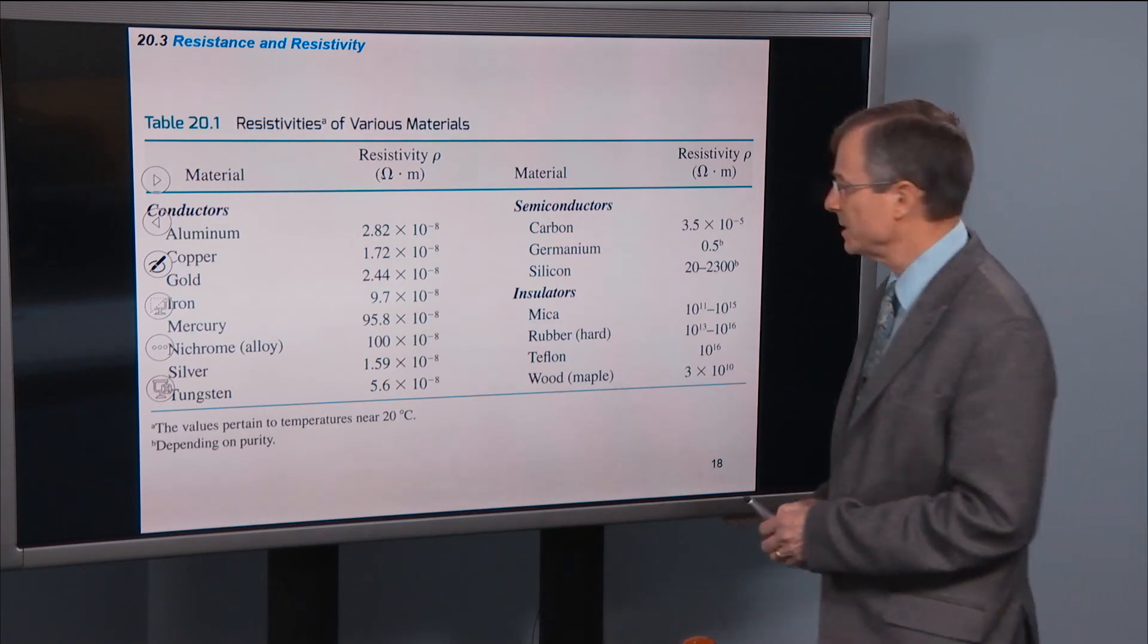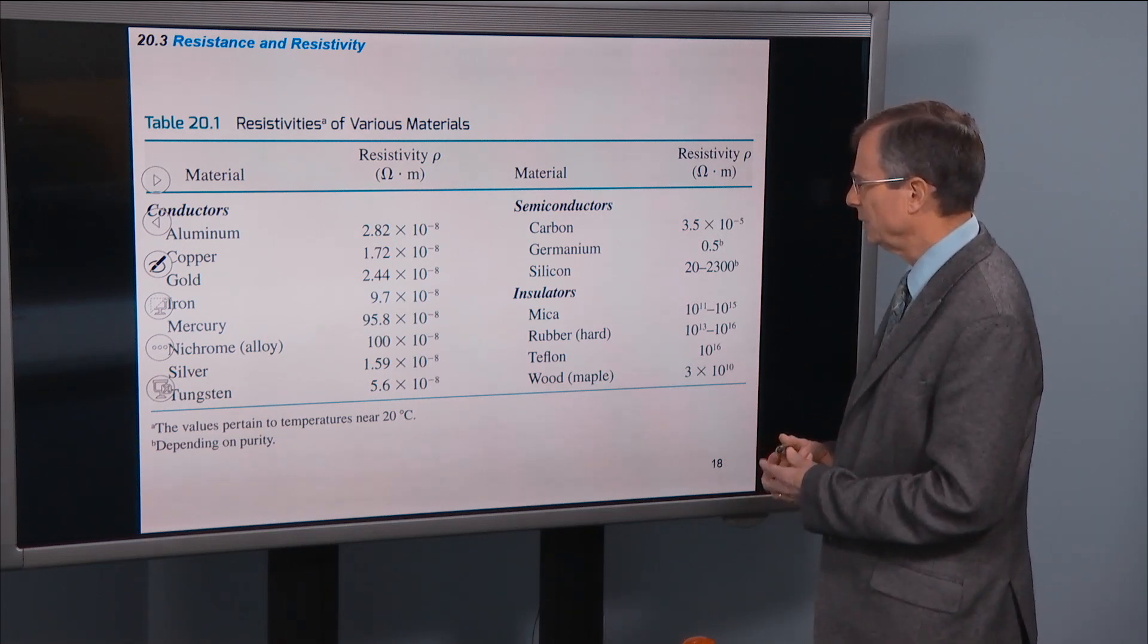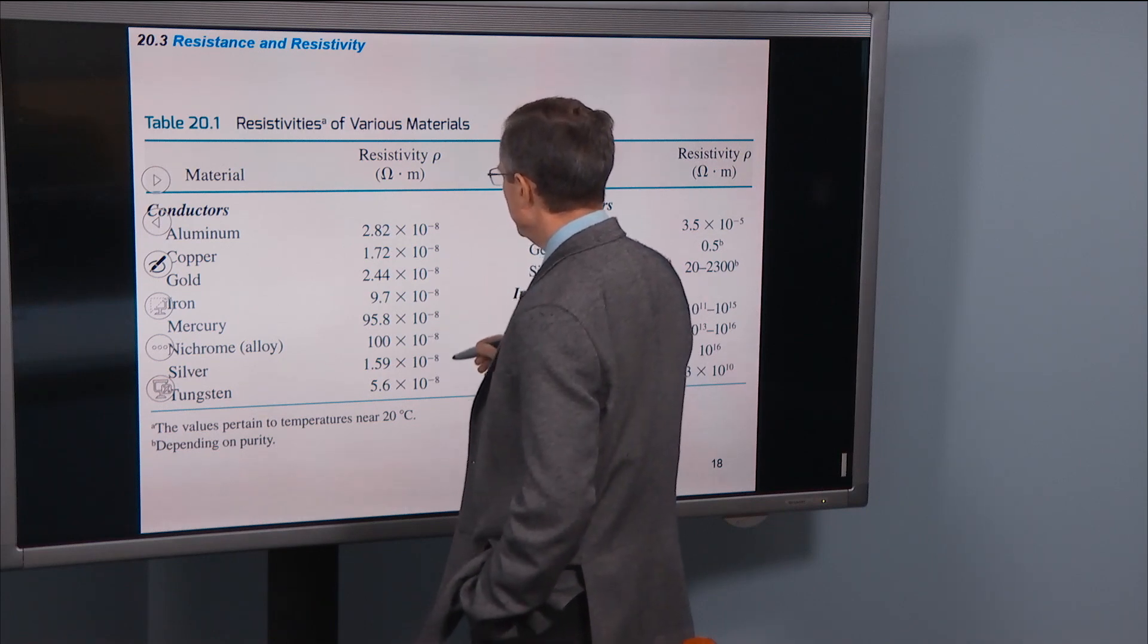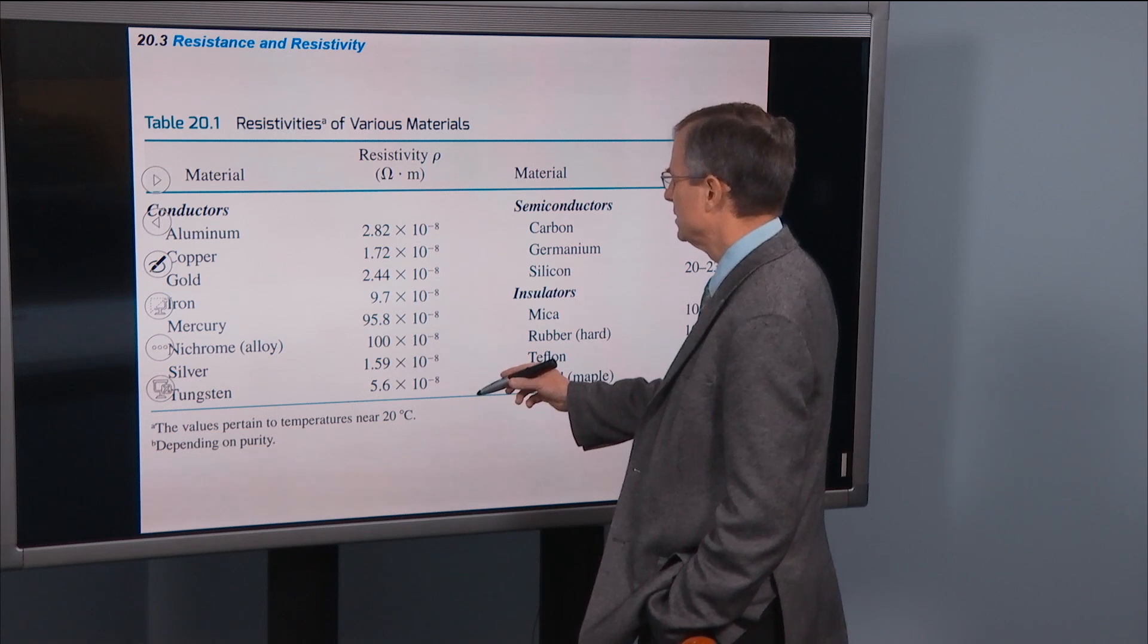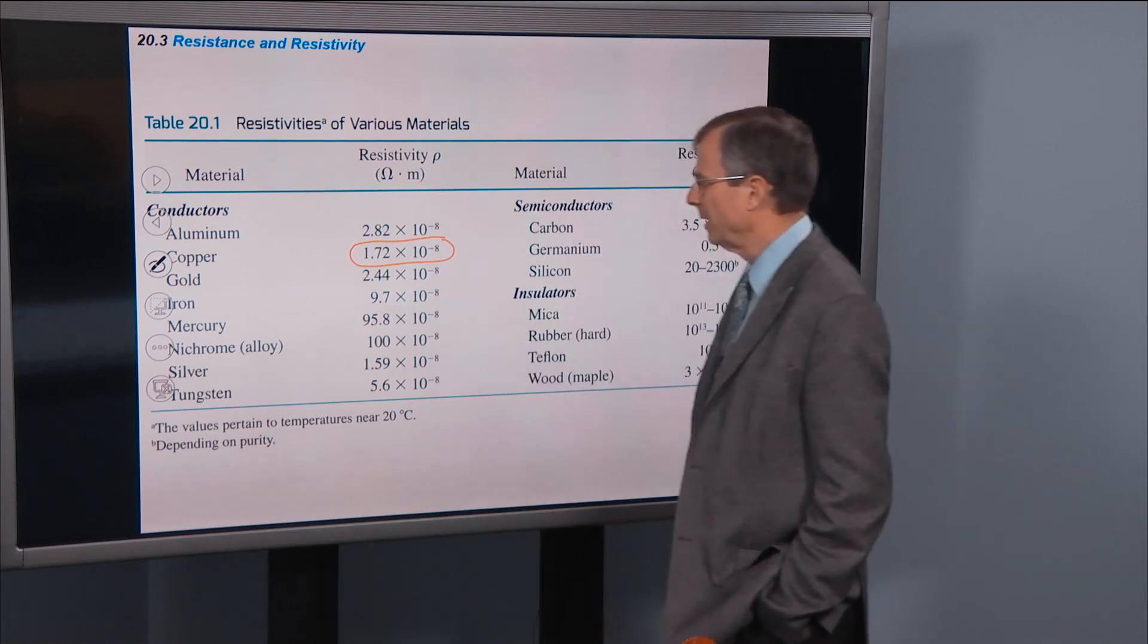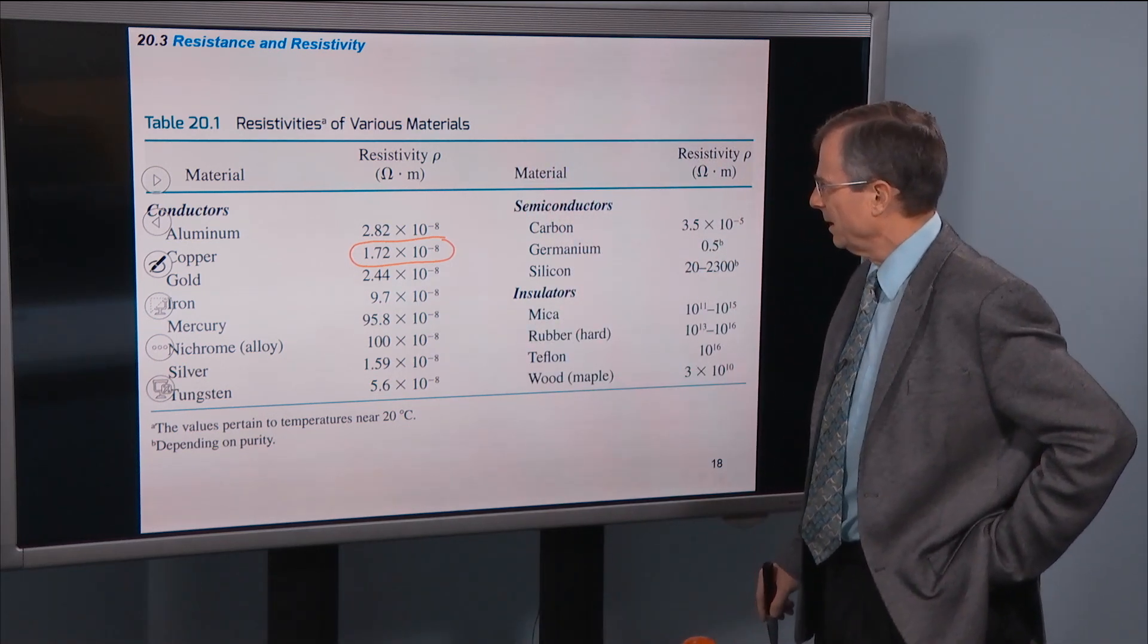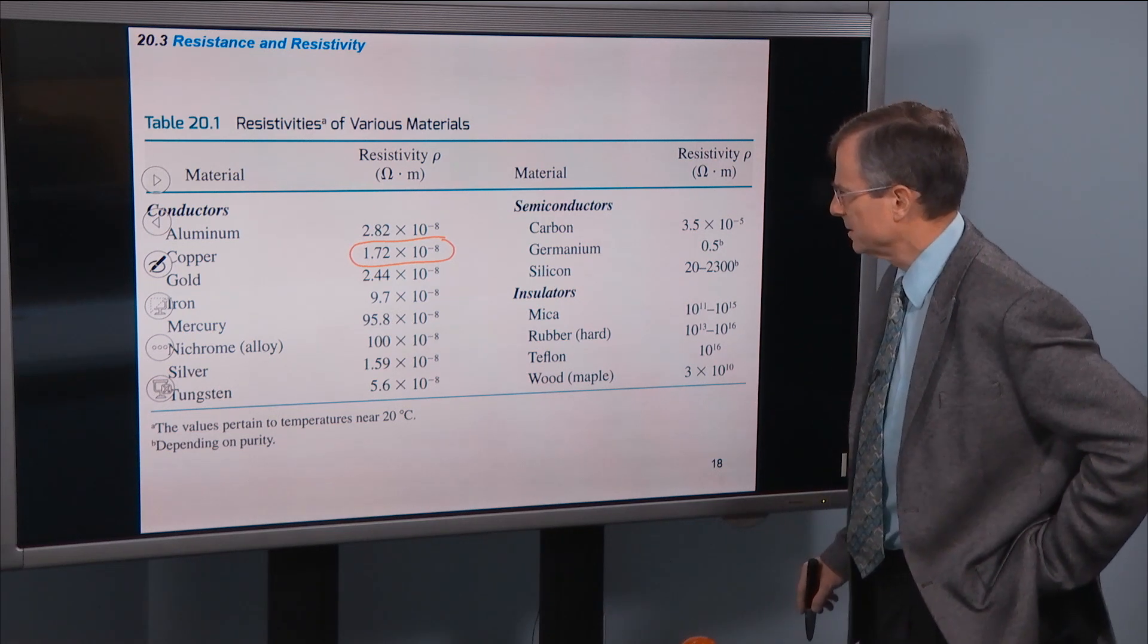Here are some resistivities of various materials. Aluminum and copper have very low resistivities. Of those on this chart, it looks like copper is the winner, having the lowest resistivity. Then gold, then aluminum, then some of these other tungsten, silver, etc.